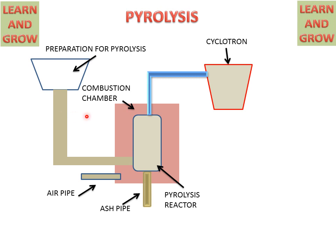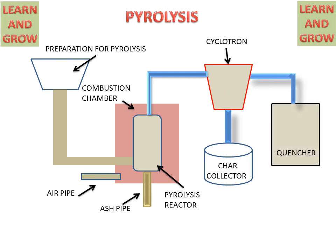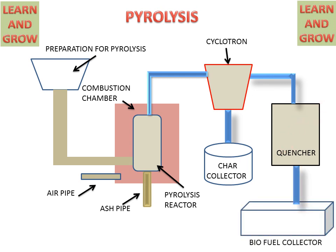The pyrolysis reactor is connected to the cyclone. In the cyclone, char particles are extracted from the gases. The cyclone is then connected to the quencher, where gases are quenched using a water nozzle, and biofuel is collected in the biofuel collector. This water nozzle provides water for the quenching of the gas.